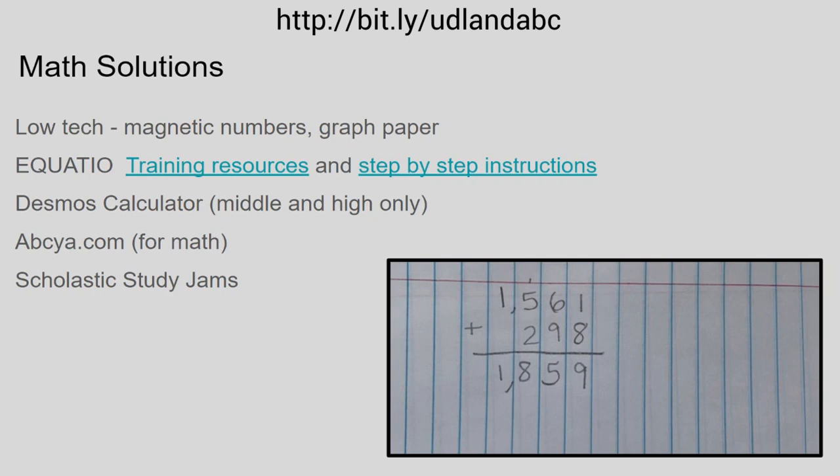There are lots of low-tech solutions: using magnetic numbers, using graph paper. Maybe it's somebody who can write but they write really large or have difficulty spacing things, so you could use graph paper. Desmos calculators for middle school and high school are really nice where they can just touch the screen in order to operate the calculator and get a solution.